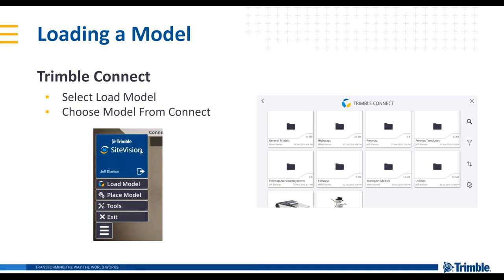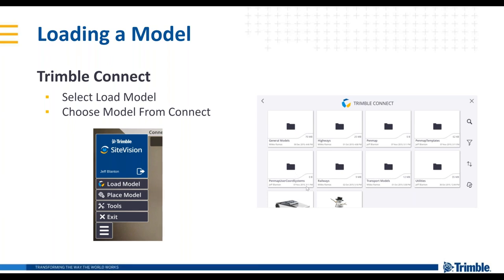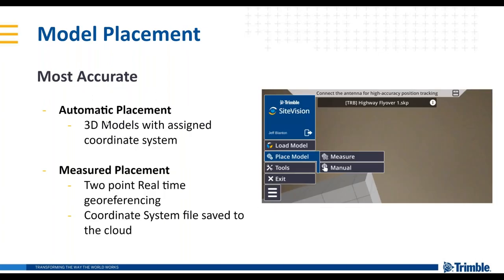Looking at the Site Vision app, we'll start with Load Model. This opens up Trimble Connect on the phone, which is the cloud. You choose the folder you want to go into and select your model. Once you've done that, it will automatically bring that model down to the phone, and then you're ready to do a model placement.